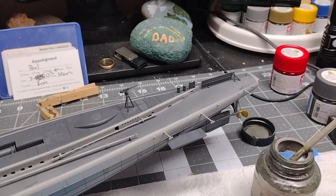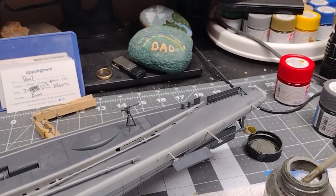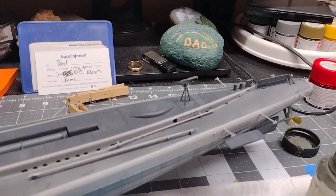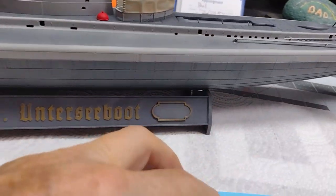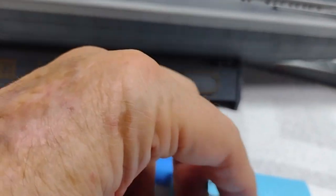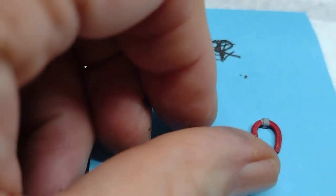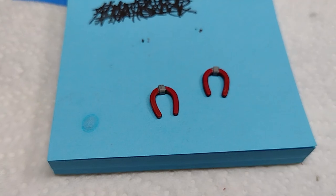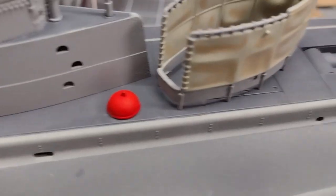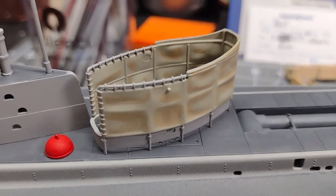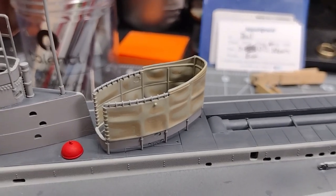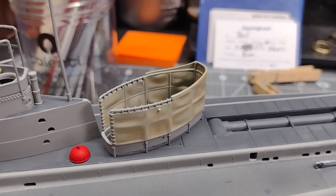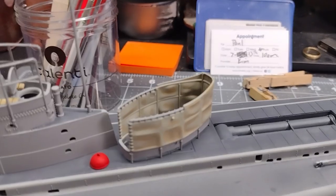And the last thing to do is going to be putting the flag staff back on. I have these little life preserver things. They are supposed to go on the sides of the canvas railing. I am not sure if I am going to put those on or not, but we will see.